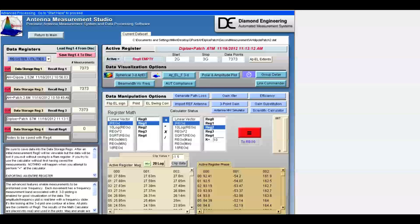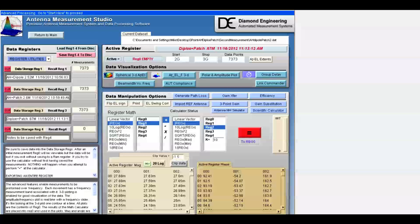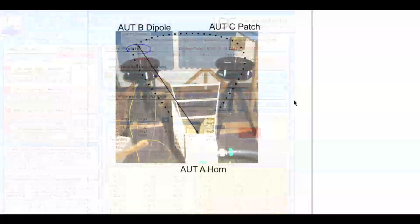In this video we're going to demonstrate how to make antenna measurements without the use of calibrated references or system calibrations. We will take an actual lab measurement and demonstrate the results.